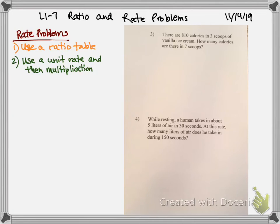So over here, there are 810 calories in 3 scoops of vanilla ice cream. How many calories are there in 7 scoops? So I'm going to do a unit rate on this one. So I have 810 calories, 3 scoops. So if I get this down to a rate by making the denominator equal to 1, so I get 1 scoop on the bottom. And then I've got 3 goes into 8 twice, which is 6 with 2 left over. 3 goes into 21 seven times evenly, and there's a leftover zero. So I get there's 270 calories in one scoop.